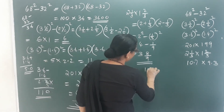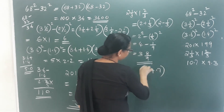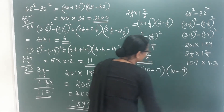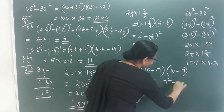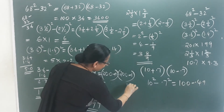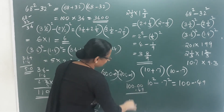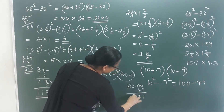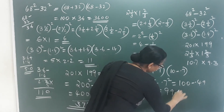Then we calculate: 10 plus 0.7 into 10 minus 0.7. That gives us 10 square minus 0.7 squared, which is 100 minus 0.49. Subtracting: 100 minus 0.49 — the digits are 1, 9, 6, 9 — the answer is 99.51.